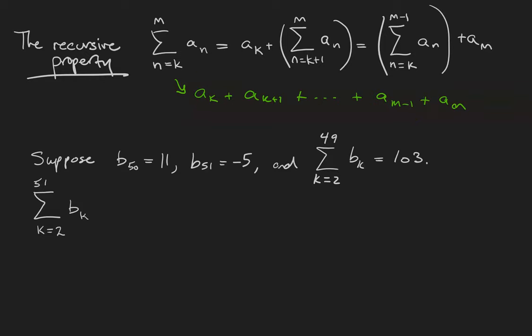Or likewise, I can shave off the first term of the sum if I want to, and I can do that as many times as necessary. For an example, suppose that b_50 is equal to 11, b_51 is equal to negative 5, and the sum from 2 to 49 of the b_k's is equal to 103. Suppose that I want to know the value of the sum from 2 to 51 of the b_k's.